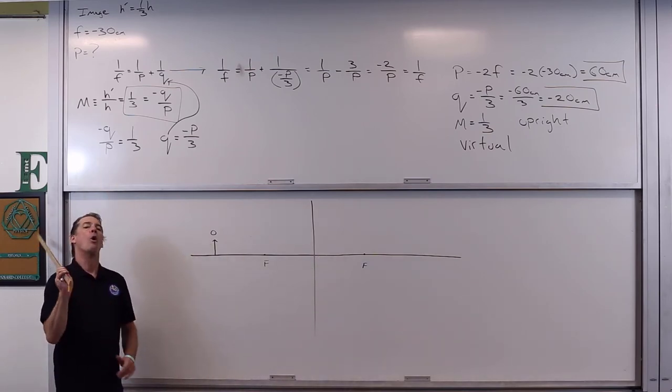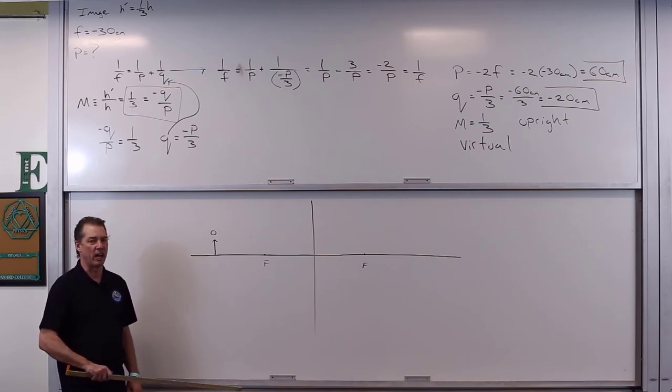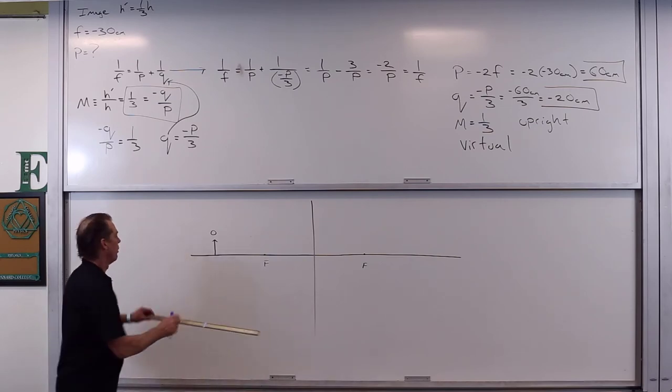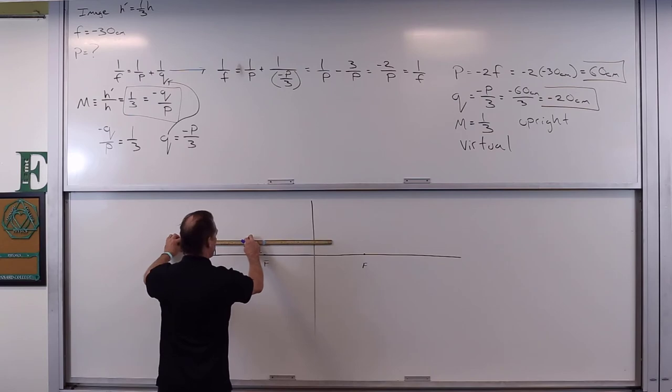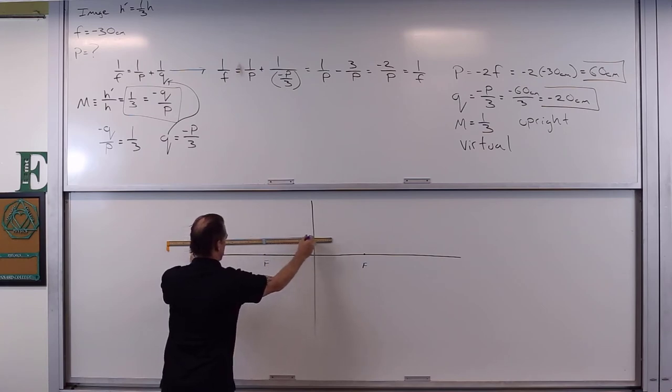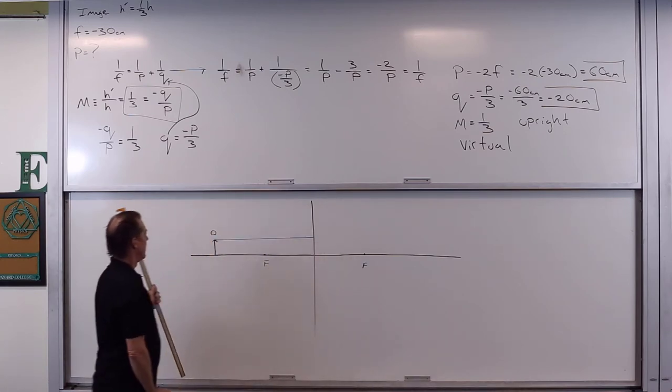What's the first ray to do? Parallel to the principal axis. And then refracts such as it's aligned with or goes through a focal point. Let's go ahead and check this out. This one goes parallel to the principal axis. There it is.